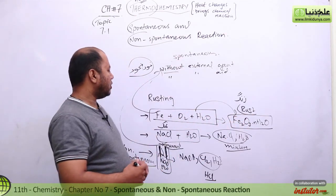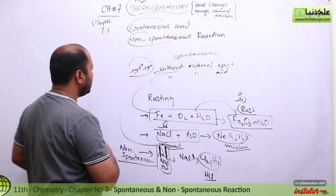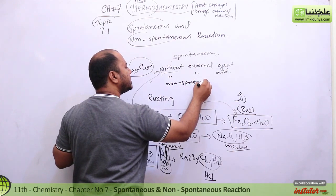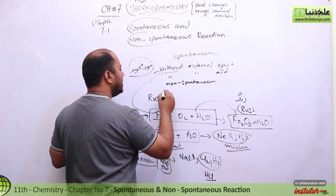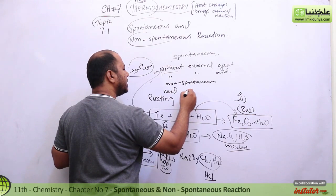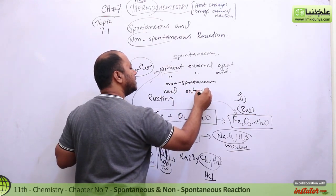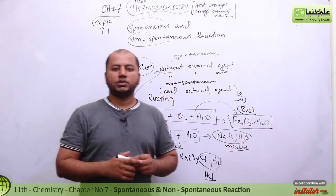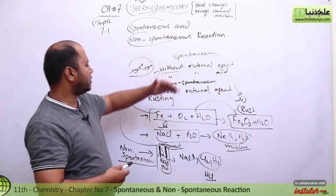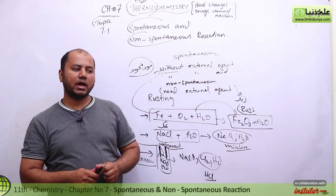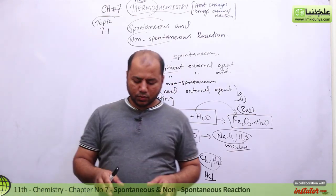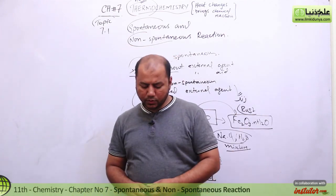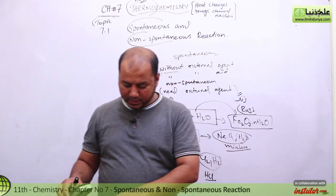Jo khud ba khud nahi ho raha, jis ko external agent required hai, that is non-spontaneous. A reaction jis mein external agent ki need hai — I hope maine confuse nahi kiya. That's the idea of spontaneous and non-spontaneous reactions. Jab bhi aap koi do substances ko kareeb late hain, woh kabhi kabhi khud aapas mein react kar jate hain, or kabhi nahi karte.